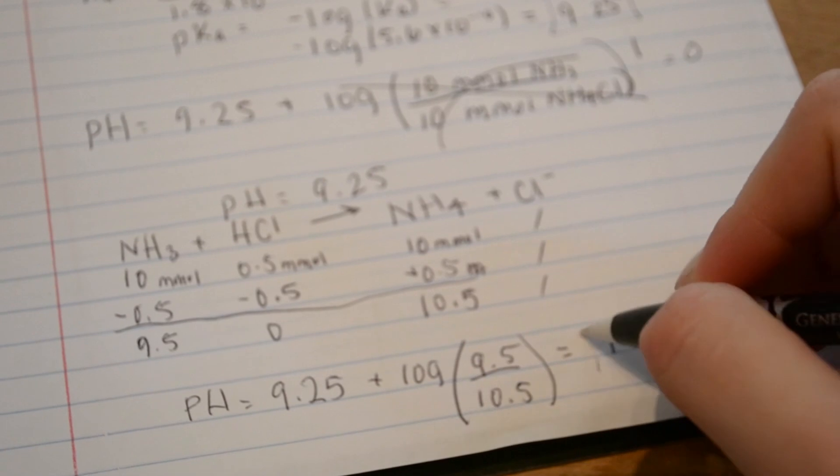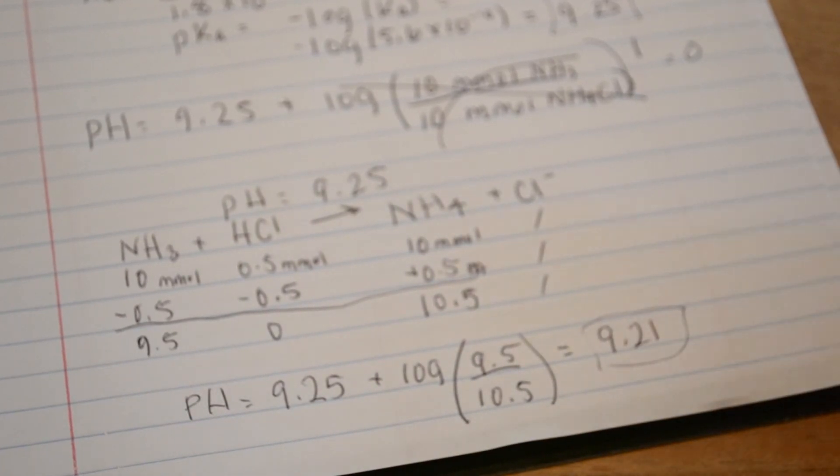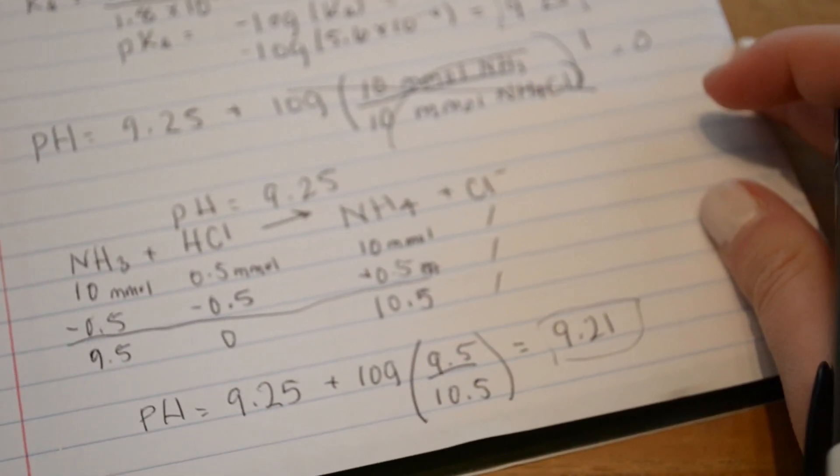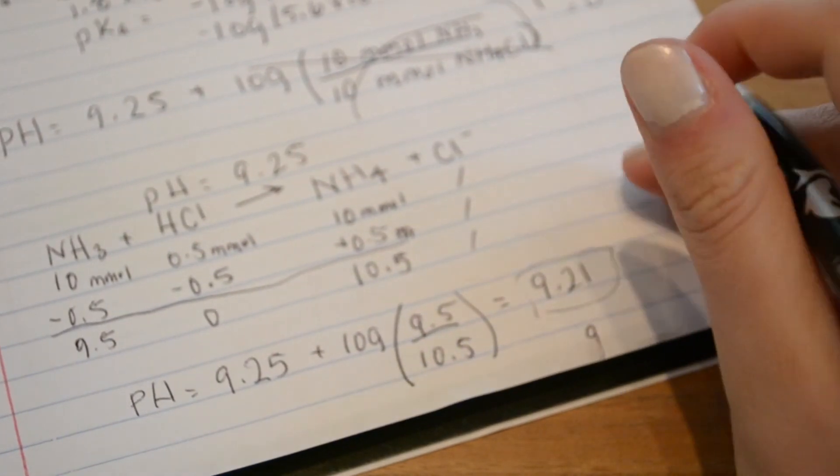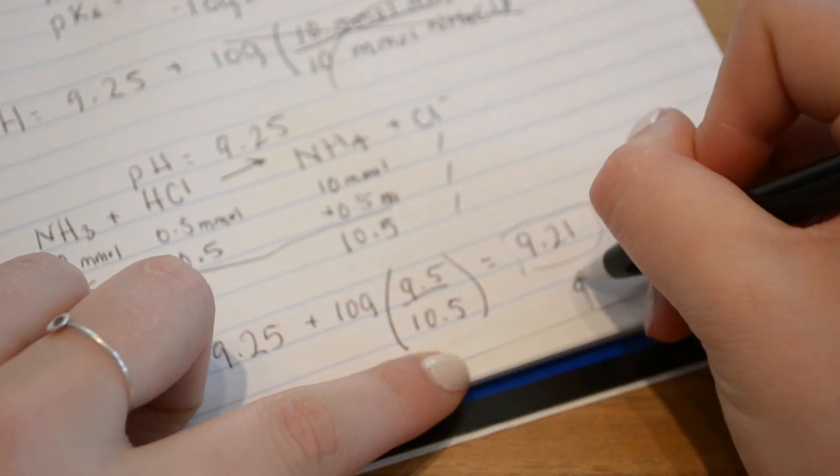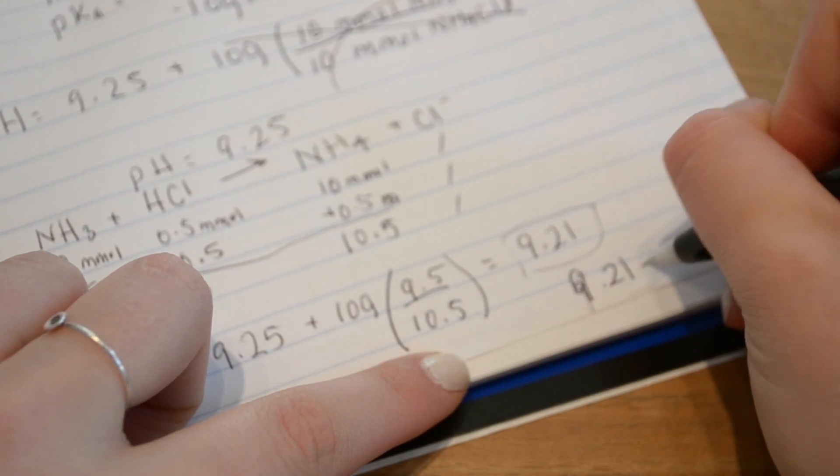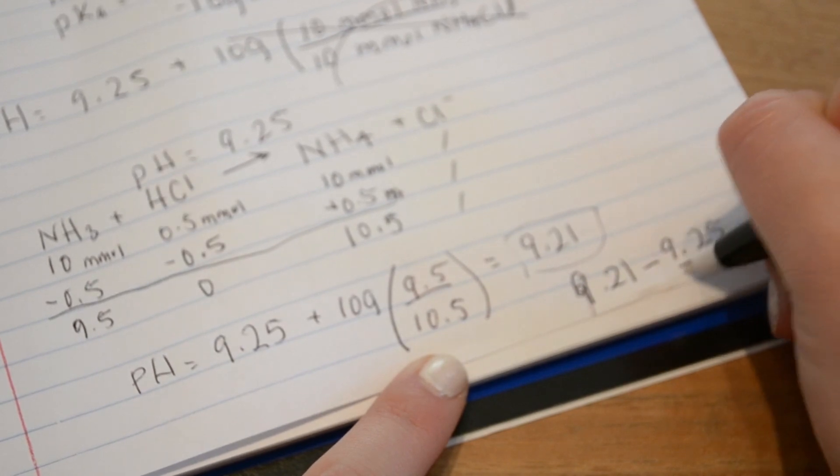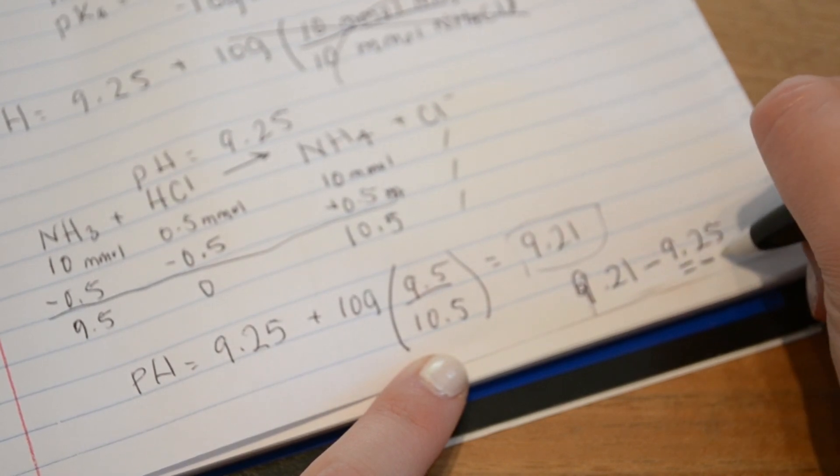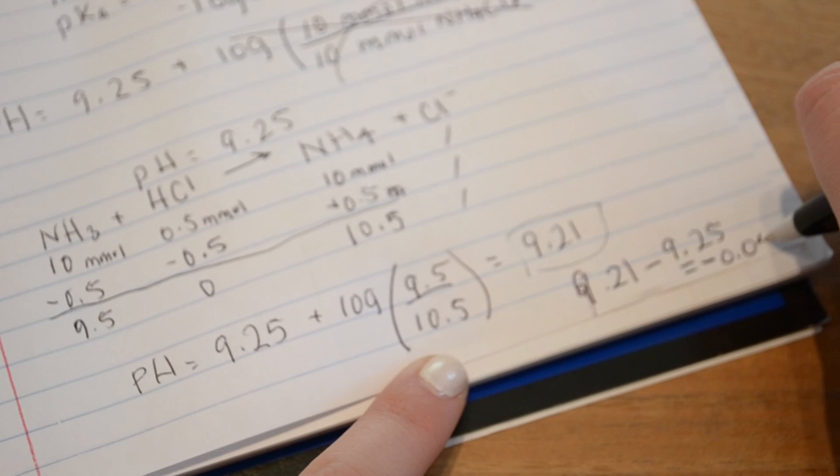So this is our final pH. To find the change in pH, we take the final 9.21 minus the starting 9.25. And we're left with a negative 0.04.